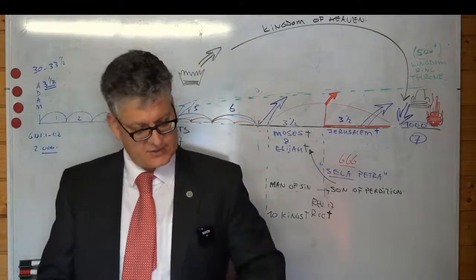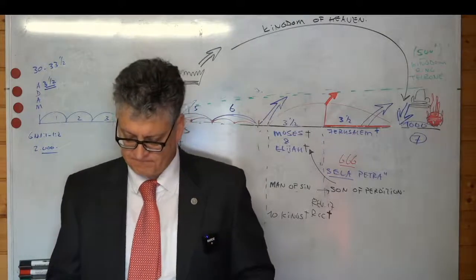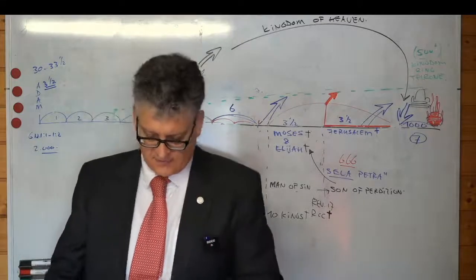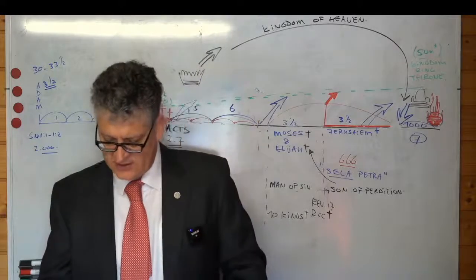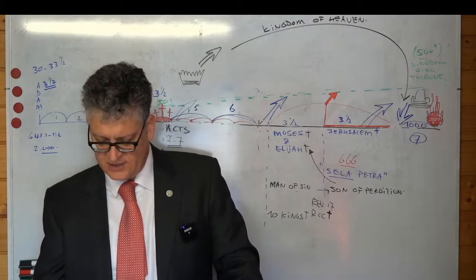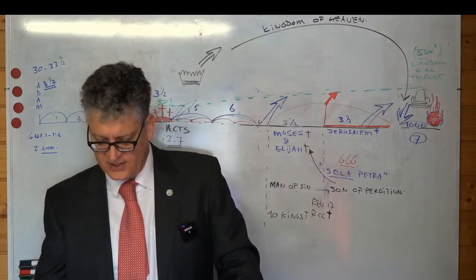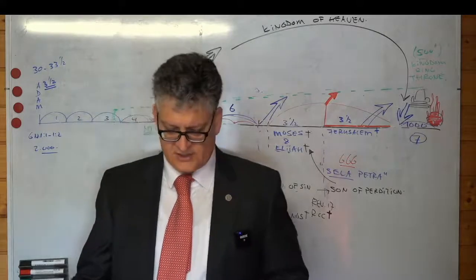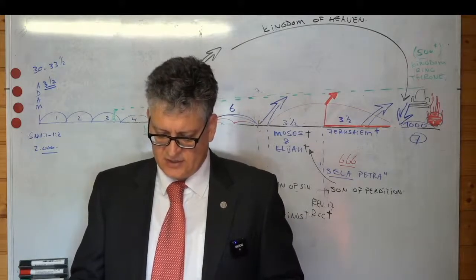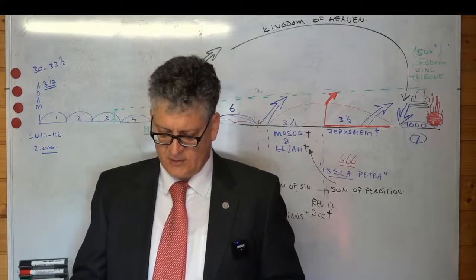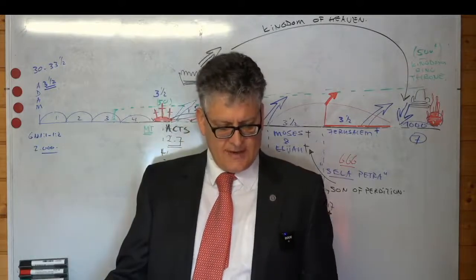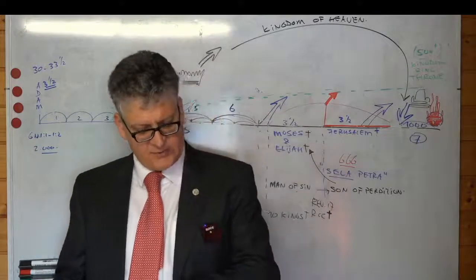Isaiah chapter 60, verse 3, 5, and 16. The Gentiles shall come to thy light, and kings to the brightness of thy rising. Then thou shalt see and flow together, and thine heart shall fear and be enlarged, because the abundance of the seas shall be converted unto thee. The forces of the Gentiles shall come unto thee. Thou shalt also suck the milk of the Gentiles and shalt suck the breast of kings, and thou shalt know that I the Lord am thy Savior and thy Redeemer, the Mighty One of Jacob. So here you see the Gentiles coming to the God of the Jews, and these Gentiles will be redeemed.